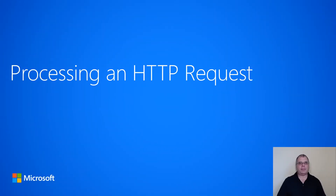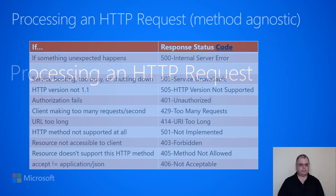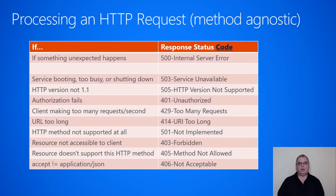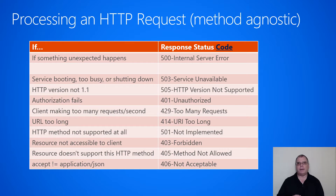In this section, I'm going to talk about what the server does in order to process a REST request. On this slide, I talk about how a server should process an incoming HTTP request. On the first row of the table, if anything unexpected happens on the service, the server should return a 500 internal server error back to the customer. This usually happens because of an unhandled exception occurring on the server side.